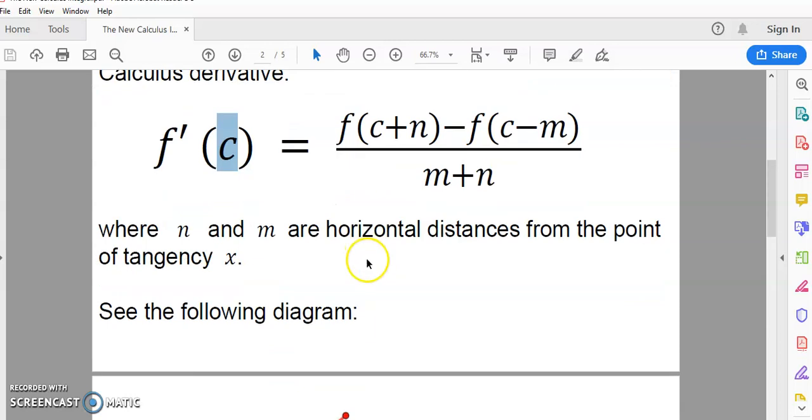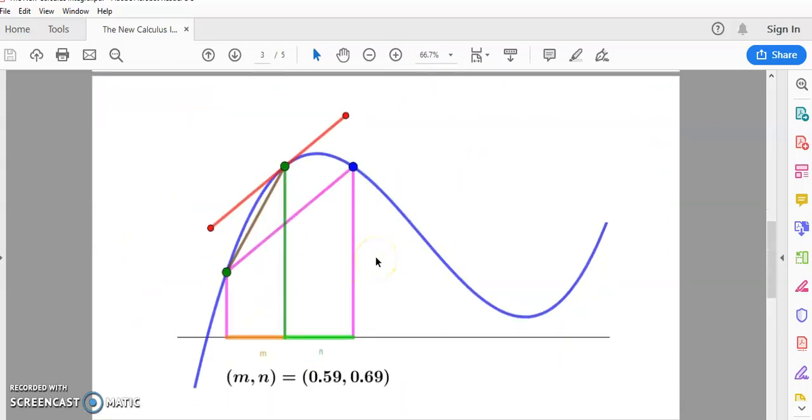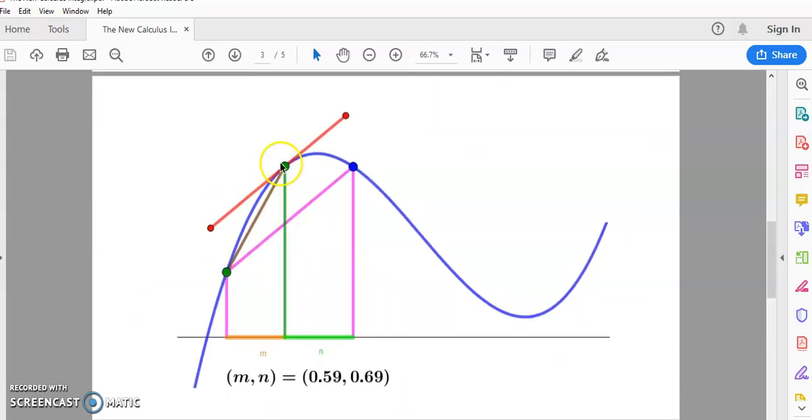And let's see how it works in the following diagram. So if you have a diagram like that, this green point here is the point of tangency, and m is this distance, and n is this distance on the right. They are both horizontal distances from the point of tangency to the endpoints of a parallel secant line to the tangent line.